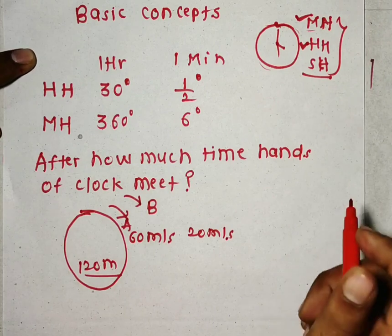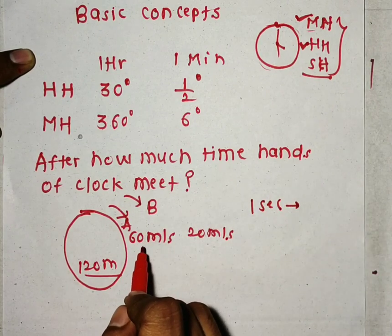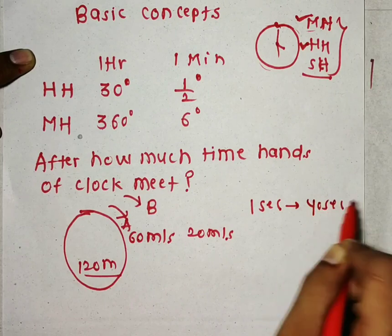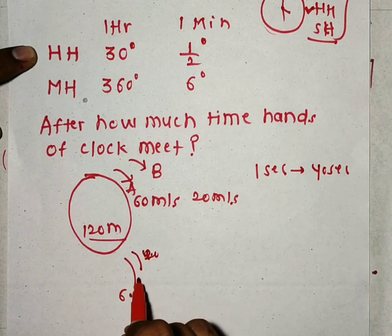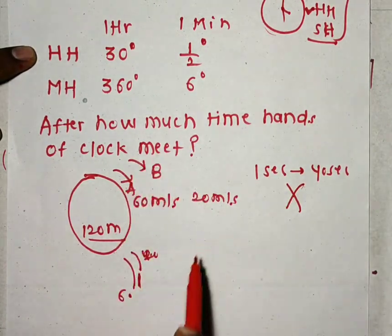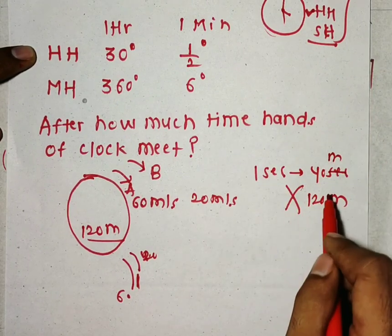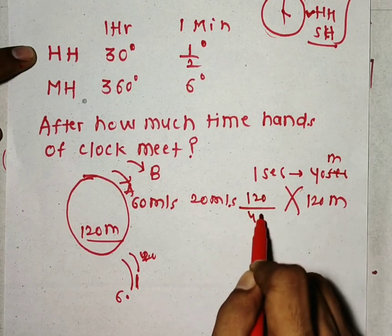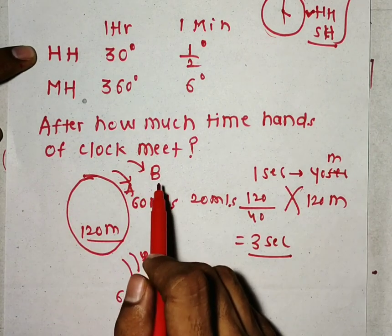In one second, A covers 60 meters and B covers 20 meters, so the difference is 60 minus 20 equals 40 meters per second. In one second there is a difference of 40 meters, so in how many seconds will there be a difference of 120 meters? We just have to do cross multiplication: 120 divided by 40 equals 3. So after 3 seconds on this circular track, A and B will meet together.